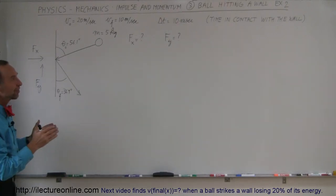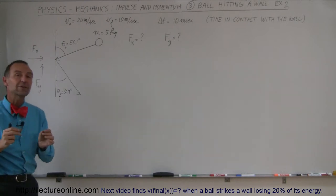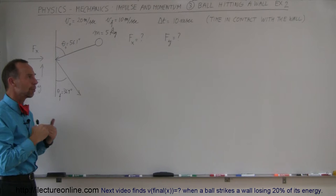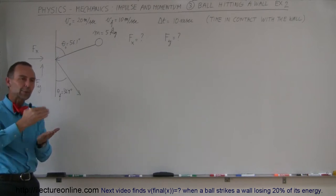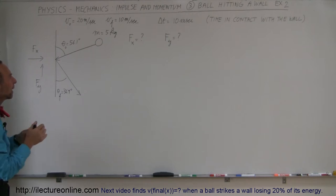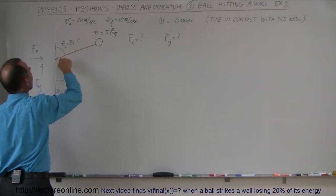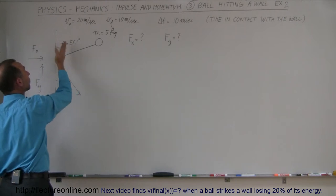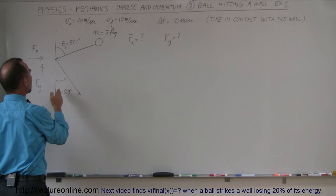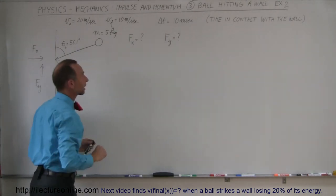Welcome to ElectronLine. In our previous example we had a problem very much like this one, but now I want to see if you can follow this systematically. In this problem we have a ball of mass 5 kilograms moving towards the wall at 20 meters per second, at an angle relative to the wall of 56.1 degrees. The final angle relative to the wall is 36.9 degrees and it's going to be leaving with a velocity of 10 meters per second.